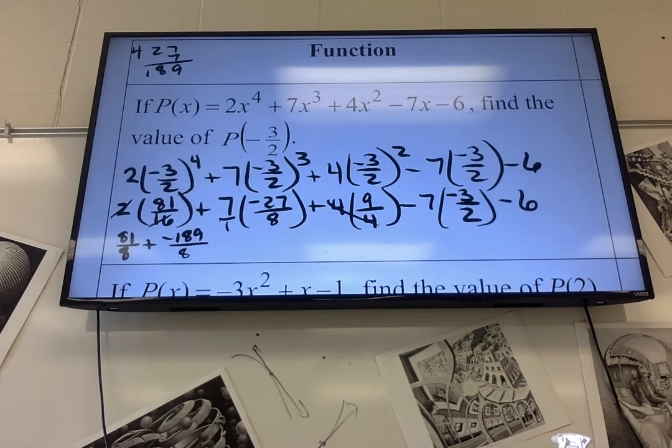4's will cancel. You get plus 9. Negative 7 times negative 3. It's positive 21. 21 over 2 minus 6.